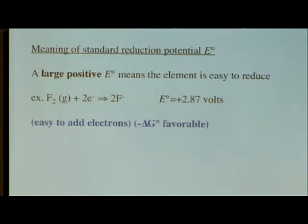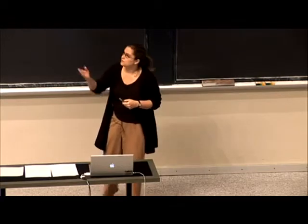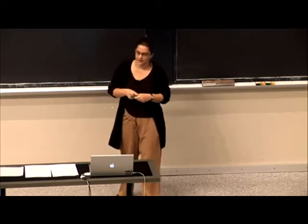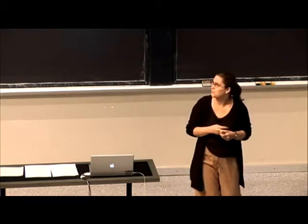So as written, that's the value of the standard reduction potential. That's a large positive number, so that's going to mean that it's easy to add electrons to F₂. The delta G naught would be favorable for that. So then you can tell me, does that make F₂ a good oxidizing agent or not, and why?